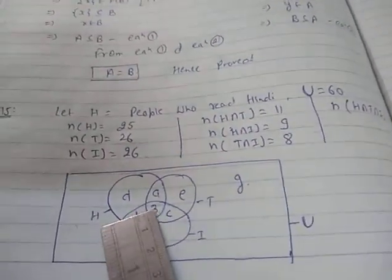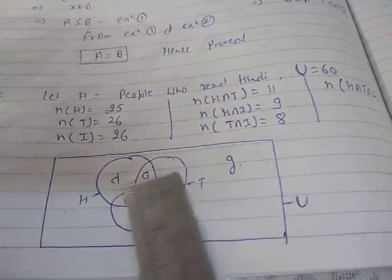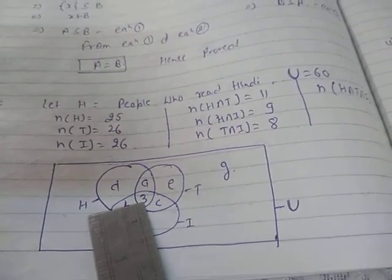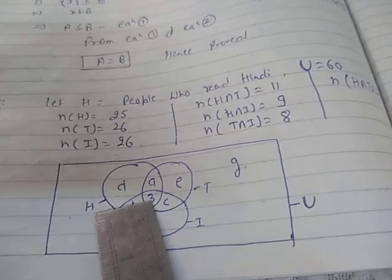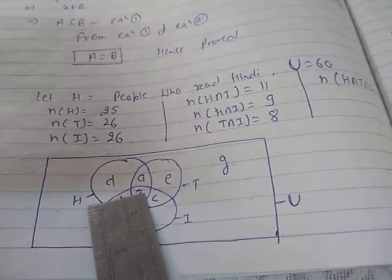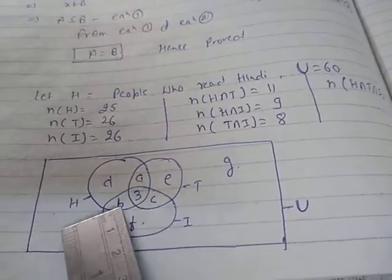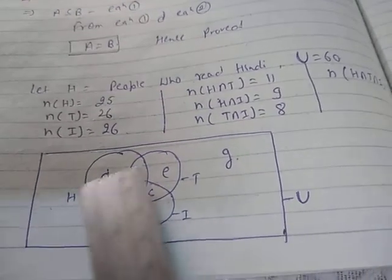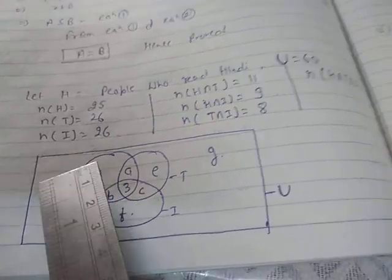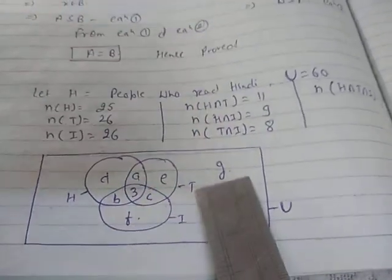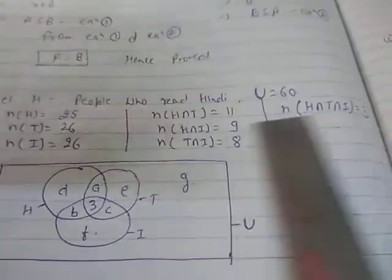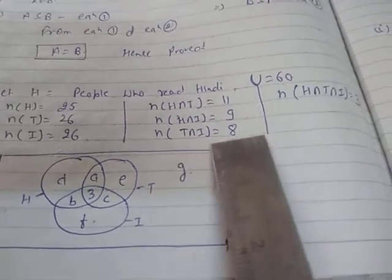The center region — the intersection of all three sets — has a value of 3, so 3 is placed there. The remaining regions are unknown, so I label them a, b, c, d, e, and f. Now, H intersection T is given as 11, H intersection I is 9, and T intersection I is 8.